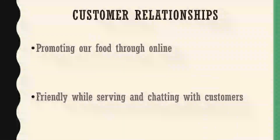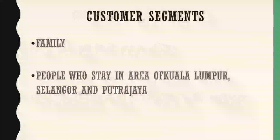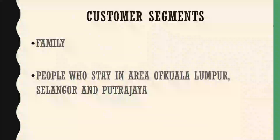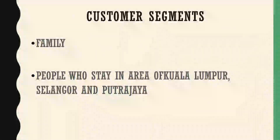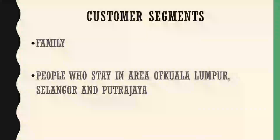For customer relationship, we promote our food through online social media and are friendly while serving and chatting with customers. For customer segments, we target families and people who stay in the areas of Kuala Lumpur, Selangor, and Putrajaya. Everyone in the family can eat it — even kids — because the nasi daging rice itself has its own flavor and already tastes delicious on its own.